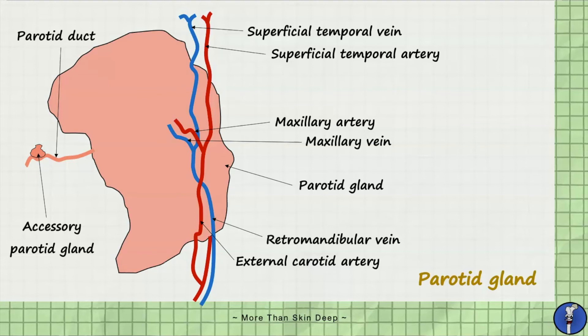Once leaving the inferior border of the parotid gland, the retromandibular vein divides into an anterior branch which drains into the internal jugular vein and a posterior branch which drains into the external jugular vein.